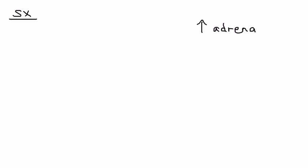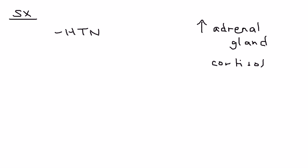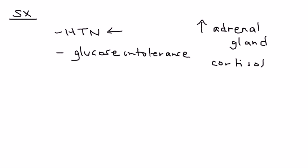The symptoms of Cushing's all happen because of the adrenal gland being hyperstimulated. Keep in mind that in addition to cortisol, the adrenal gland also produces other hormones that can cause these symptoms. Key symptoms include hypertension and glucose intolerance, the latter due to the mineralocorticoids secreted by the adrenal gland.